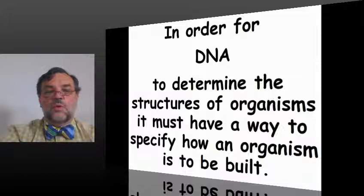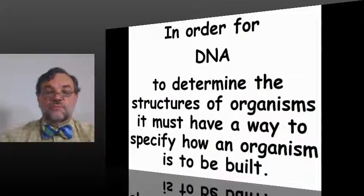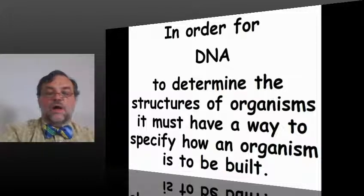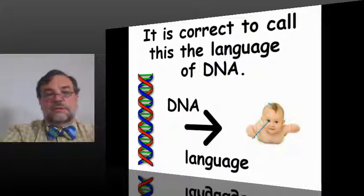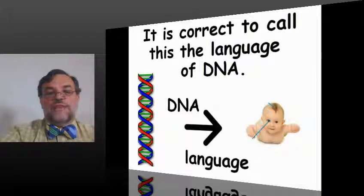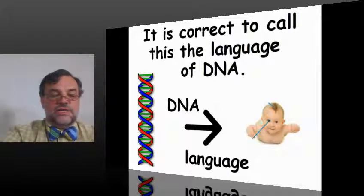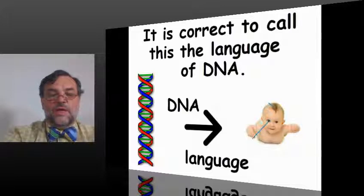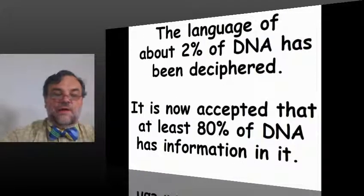In order for DNA to determine the structures of organisms, it must have a way to specify how an organism is to be built. It is correct to call this the language of DNA. On the left side you have DNA represented, and the right side a sample organism that it would make. This is the DNA language that specifies how that organism is going to be built.